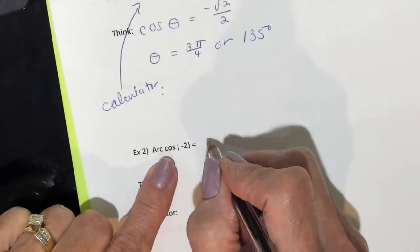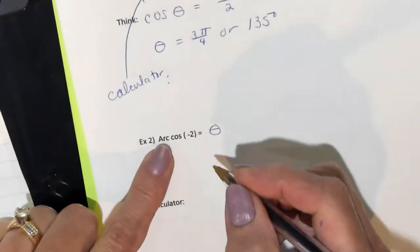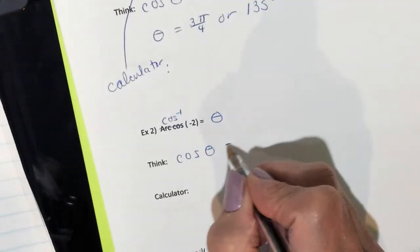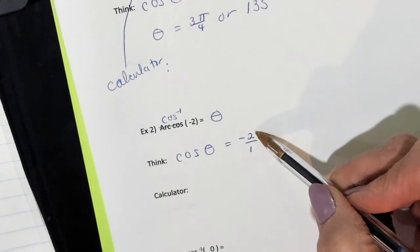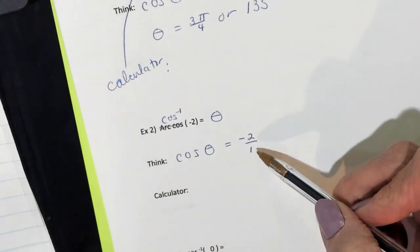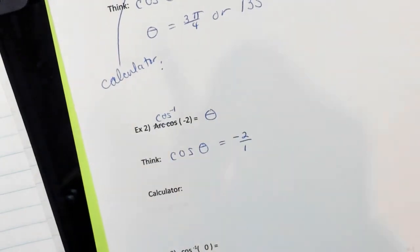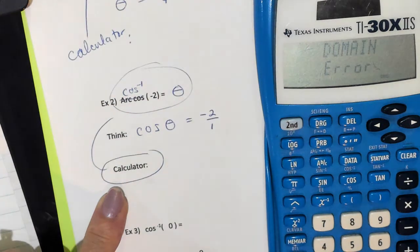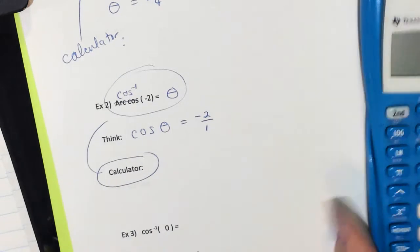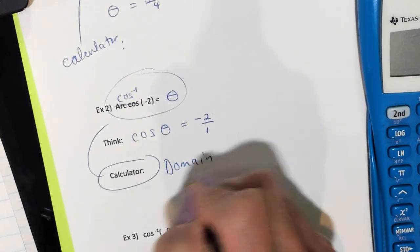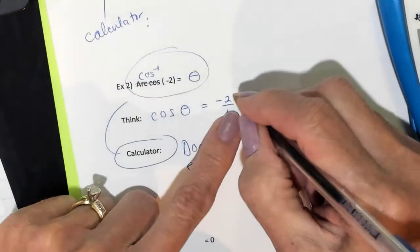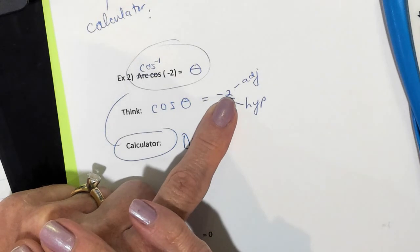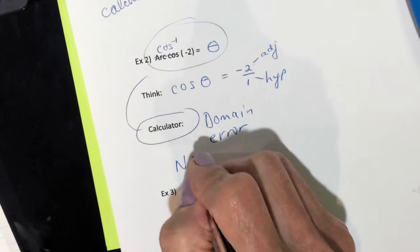Next: arc cosine of negative 2 equals theta. Arc cosine means inverse cosine. We're thinking the cosine of what equals negative 2, making it adjacent over hypotenuse. Put this in your calculator — and domain error. Why? Can you have a hypotenuse of 1 and an adjacent side of 2? No, that makes no sense. So there is no solution.